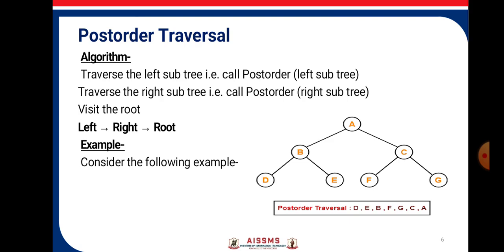Consider the example. First we will traverse the left part, so we will get D, then the right part E, then the root B. Then we will move to the right part of A — we will get F, then G, then C, and lastly the root A. So the post-order traversal is D, E, B, F, G, C, A.